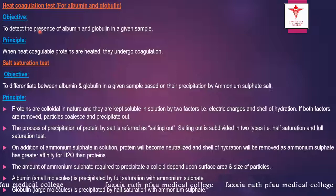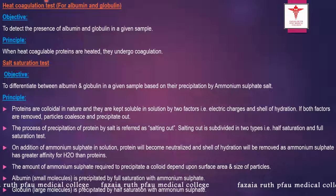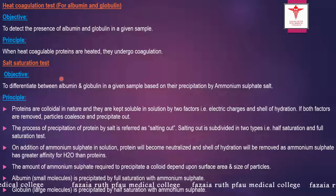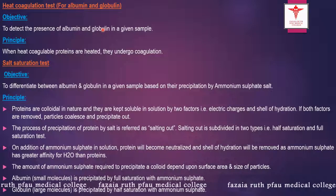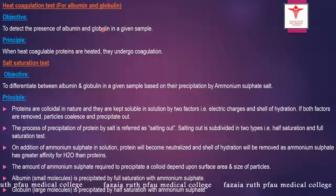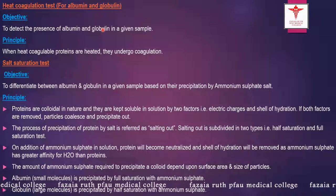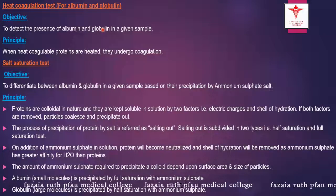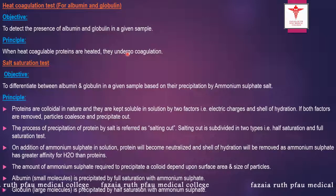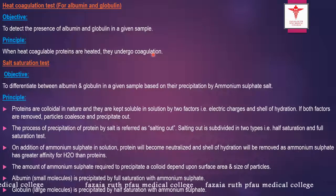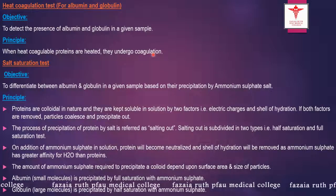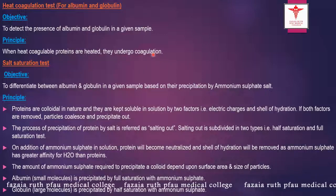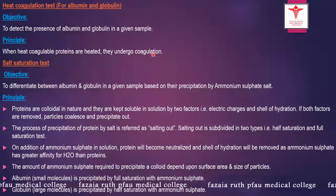The third and very important test is the coagulation test, done to detect the presence of albumin and globulin in a given sample. The principle states that when heat coagulable proteins such as albumin and globulin are heated, they undergo coagulation and form a coagulum in the test tube. The solution will turn turbid, giving a curdy kind of appearance, indicating the presence of albumin and globulin.